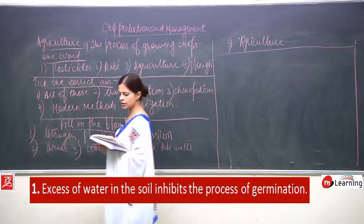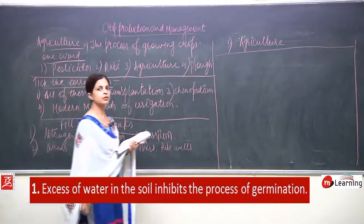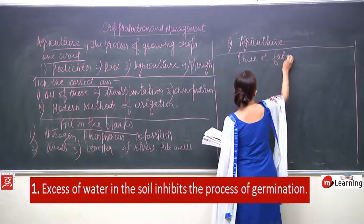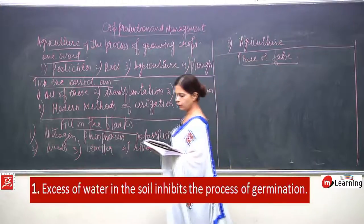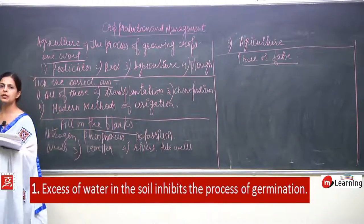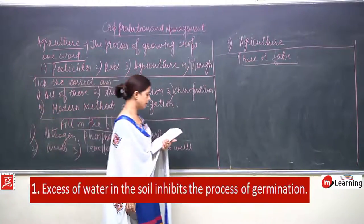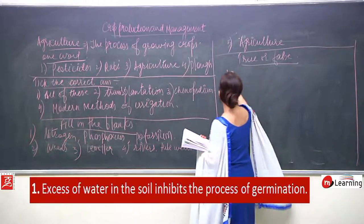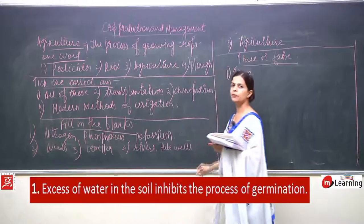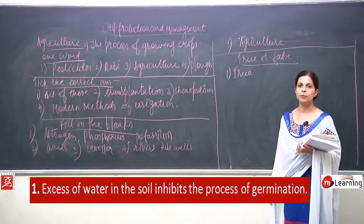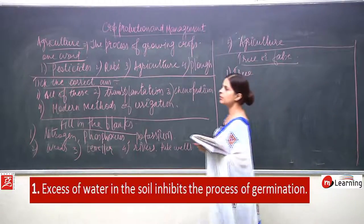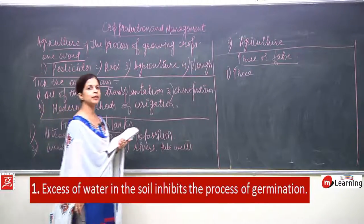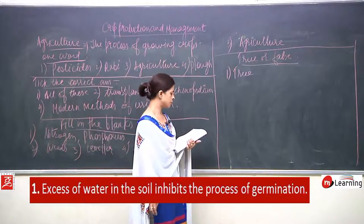Now the next true and false section. A: excess of water in the soil inhibits the process of germination — very true. A proper amount of water is required; irrigation must be done at particular intervals. If more is given, seeds won't germinate; if less is given, seeds also won't germinate.